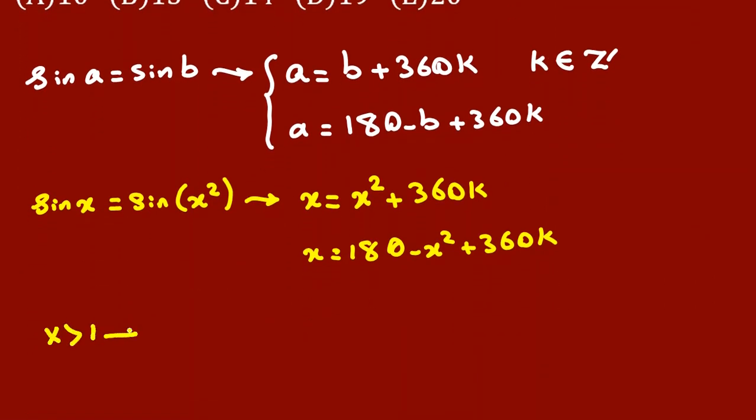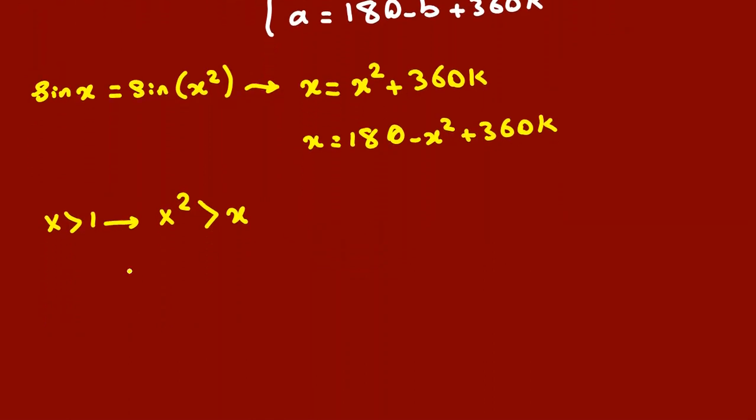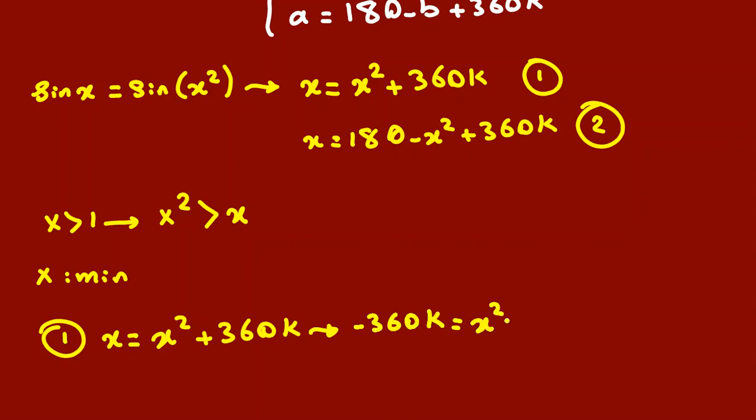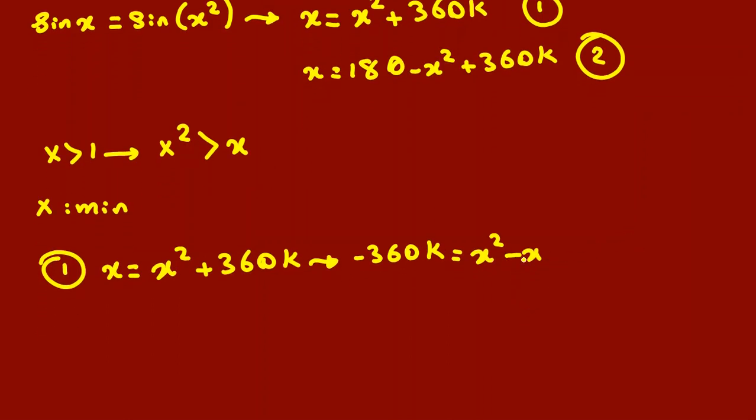Because x is greater than 1, we can say x² is greater than x. Let's focus on x, which is the minimum. If we analyze cases one and two: x equals x² plus 360k. We conclude negative 360k equals x² minus x. If you pay attention to x² minus x, the graph will be - the roots are x times (x minus 1), which are 0 and 1.